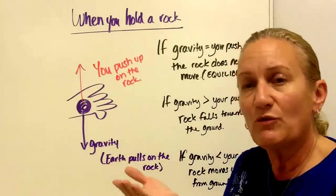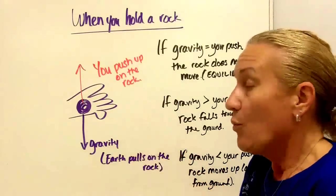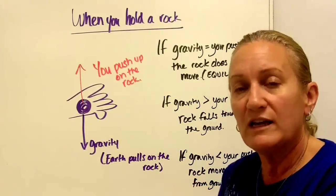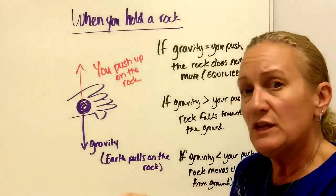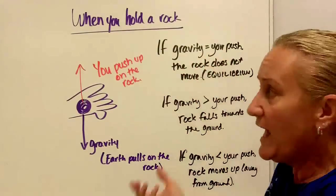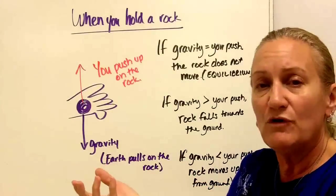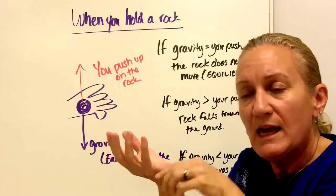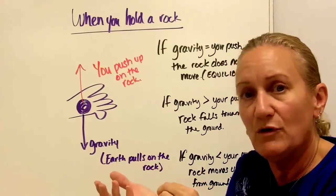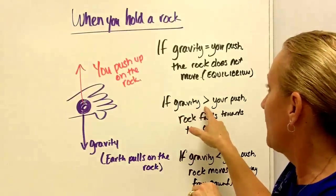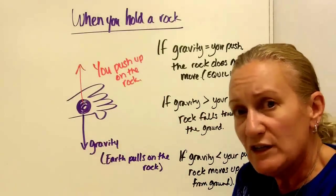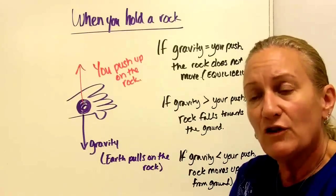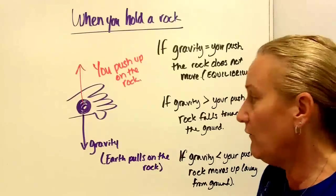So let's give another example. When you hold a rock in your hand, two things are happening. One is you are literally pushing up on the rock, and the second is gravity is pulling it down, or the earth is pulling on the rock. Because if your hand wasn't there, the rock would fall. If the gravity is the same, is equal as your push up on the rock, the rock doesn't move. So if you're just sitting there holding a rock or a book or a pencil or whatever in your hand, the amount of force that you're using to push up is the same amount as the force that the gravity is pulling down, and it doesn't move.